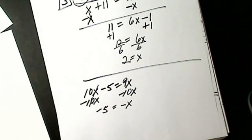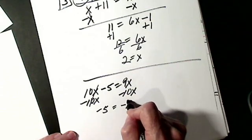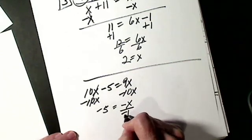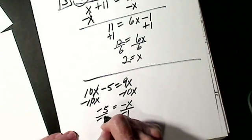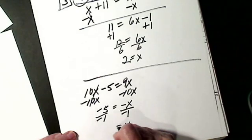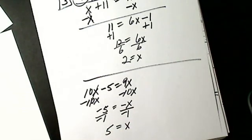Then you have to know you're not done. There's really a 1 in front of that X. So I've got to divide each side by negative 1. So I get X equals positive 5.